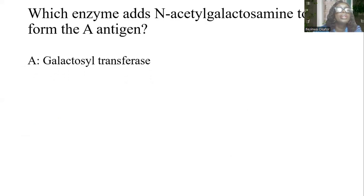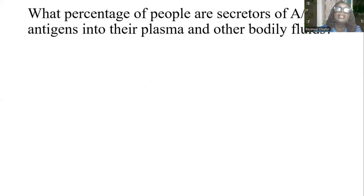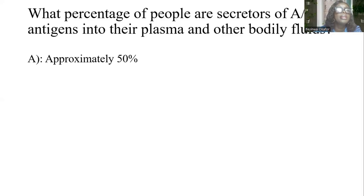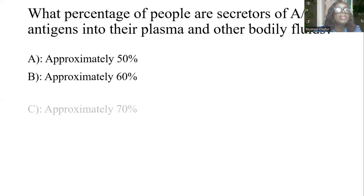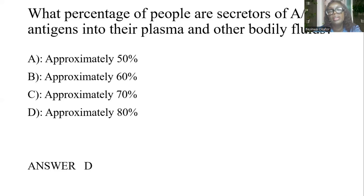Which enzyme adds N-acetylgalactosamine to form the A antigen? A) Galactosyltransferase. B) Fucosyltransferase. C) N-acetylgalactosaminyltransferase. D) None. The answer is C: N-acetylgalactosaminyltransferase. What percentage of people are secretors of A and B antigens into their plasma and other body fluids? Options: approximately 50%, 60%, 70%, 80%. The answer is D: approximately 80%. The majority of people are actually secretors — they can secrete A or B substance in their body fluids.